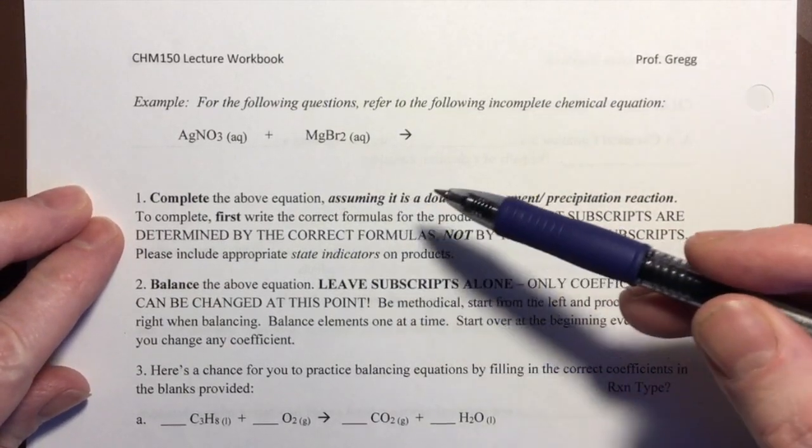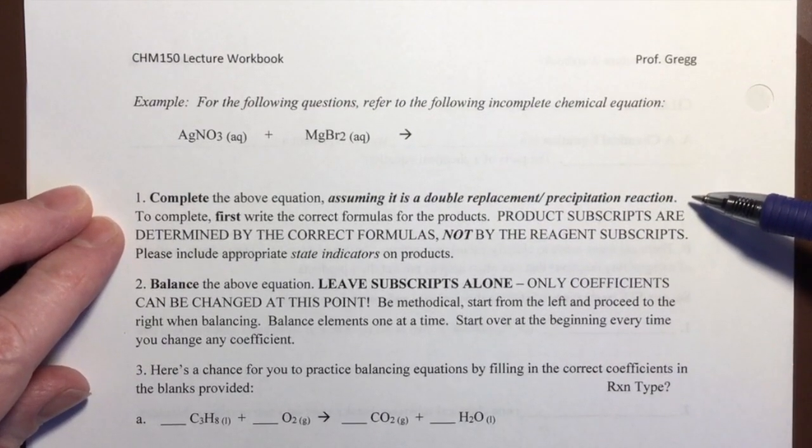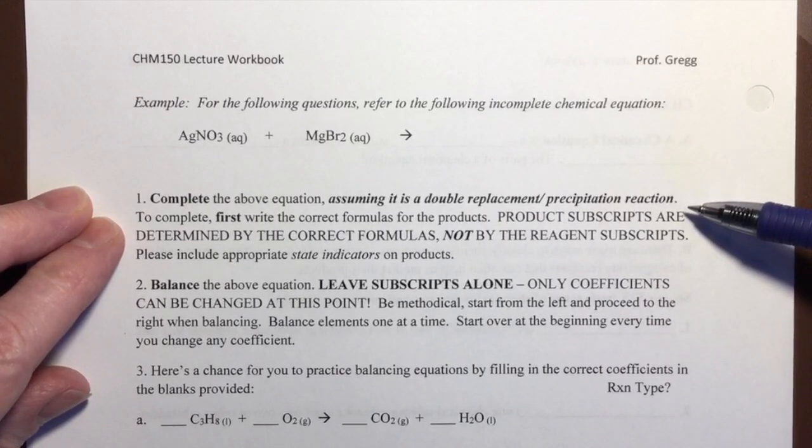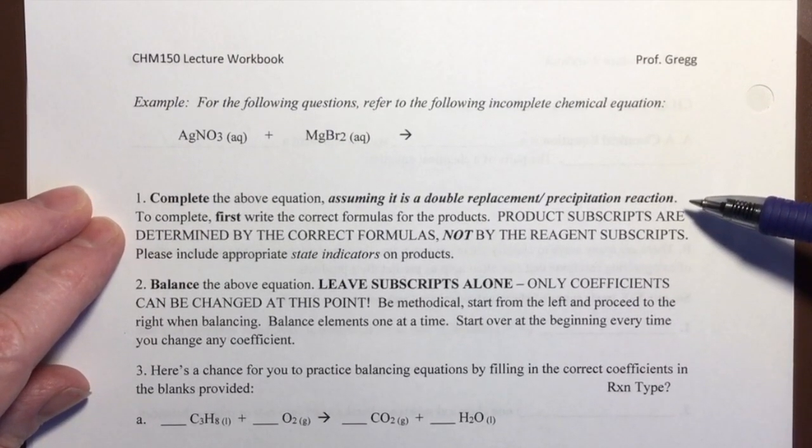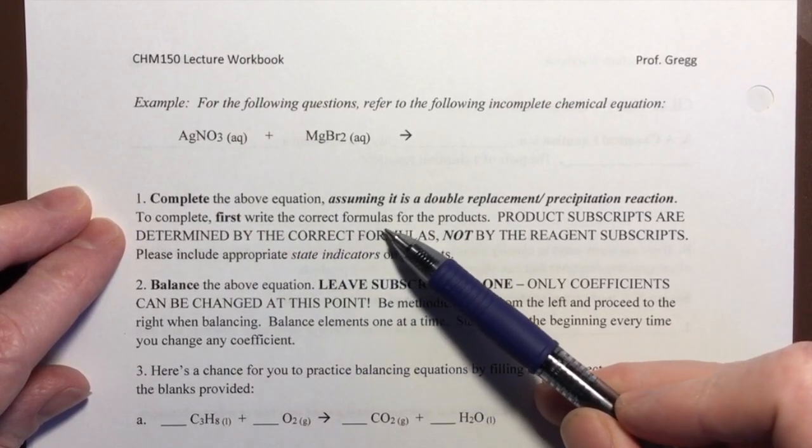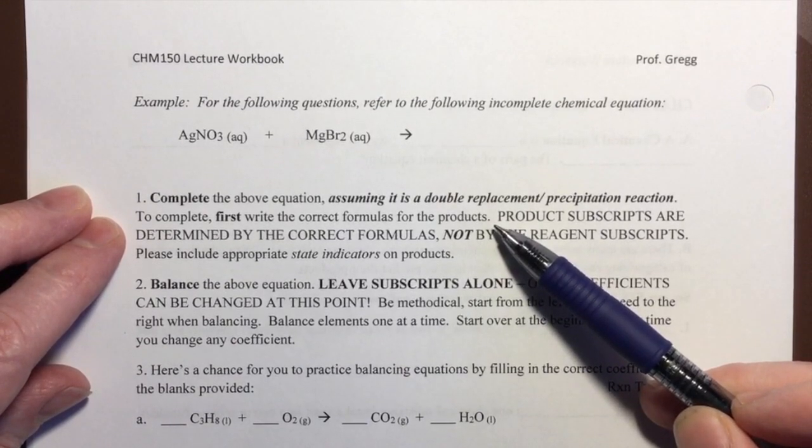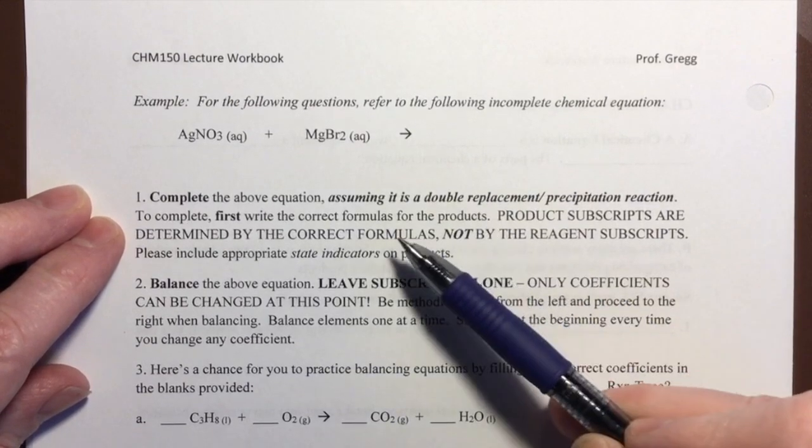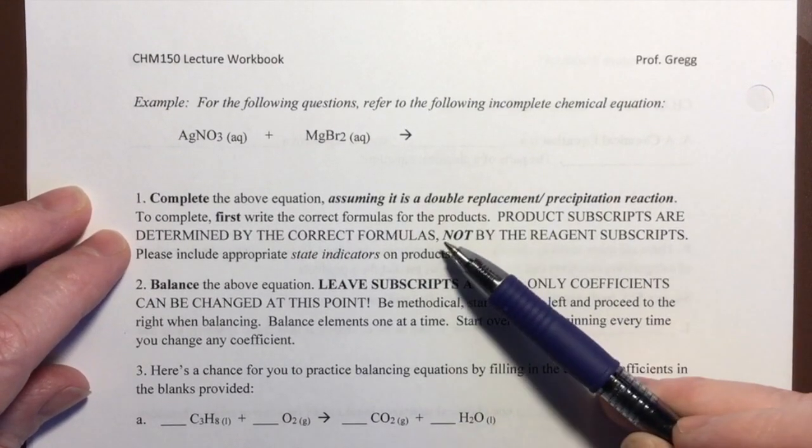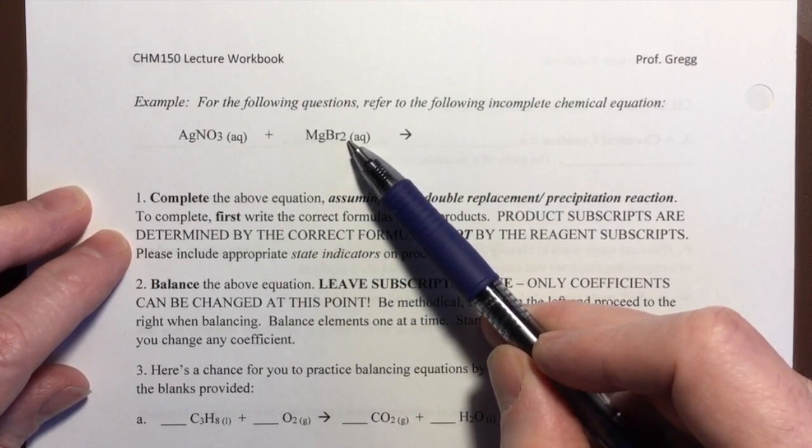Step one, it says complete the above equation, and we're going to assume that it's a double replacement precipitation reaction. Later, with enough practice, you'll become skilled enough that you will recognize the type of reaction without being told. But for now, I'll tell you it's a double replacement precipitation reaction. To complete it, we first write the correct formulas for the products. We cannot balance an equation until we have the correct products written with their correct formulas. The product subscripts are determined by the correct formulas, not by the reagent subscripts. Just because there's a two here on this bromine doesn't necessarily mean there's going to be a two on the bromine when we get over here.